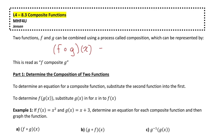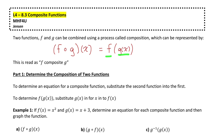Another way of writing that, which makes it more clear what that means, is f of g of x, which essentially means we use the output of g of x as the input for the f of x function. When reading these notations, we could say f composed of g, or f of g of x.